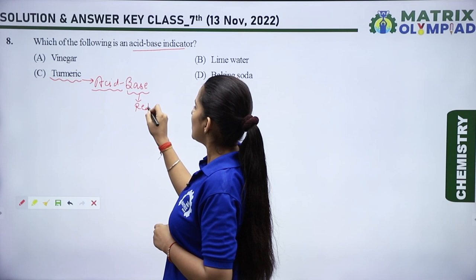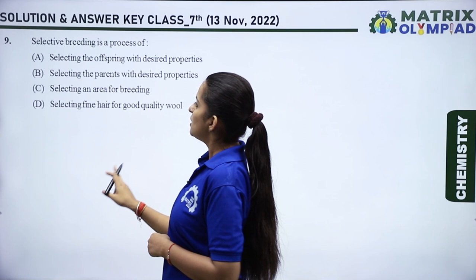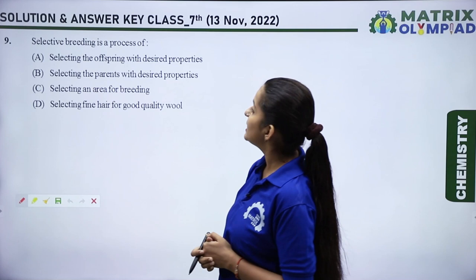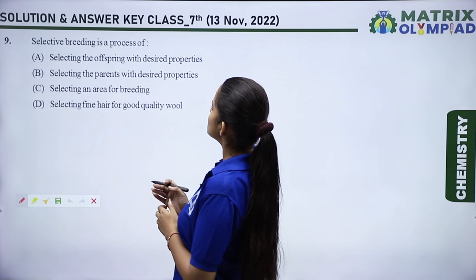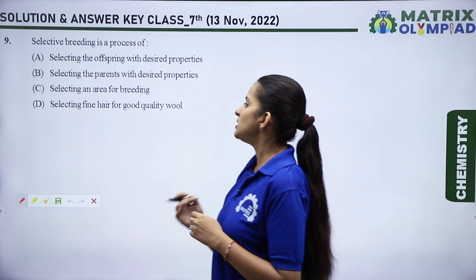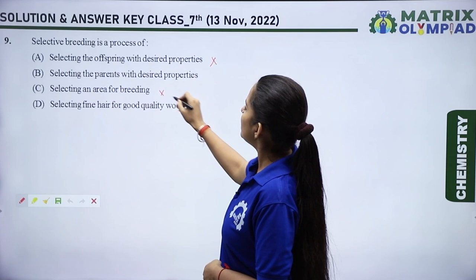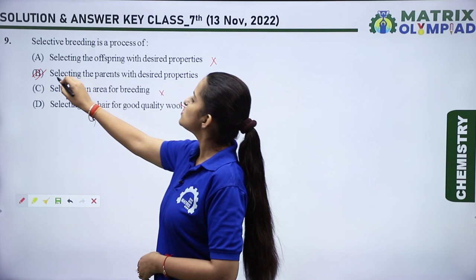Next question: selective breeding is a process of — option A: selecting offspring with desired properties; option B: selecting the parents with desired properties; option C: selecting an area for breeding; option D: selecting fine wool. Options A, C, and D are incorrect. Option B is correct — selective breeding is a process of selecting the parents with desired properties.